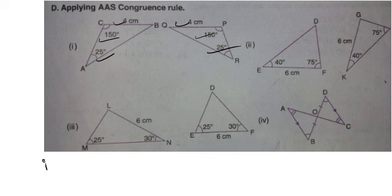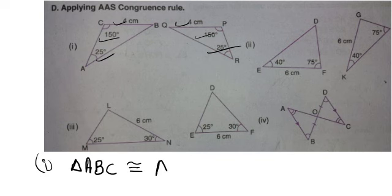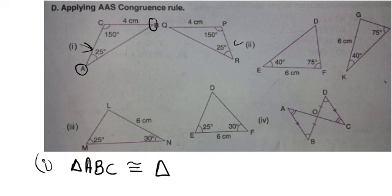Hence this triangle is congruent. We have to write it in a proper sequence. The second triangle you name should be in proper sequence based on the name of the first triangle. This triangle is ABC, so we write: Triangle ABC is congruent to — and then we name carefully. If AB is named first, the corresponding side in the other triangle should be named first.